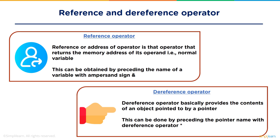The dereference operator basically returns the content stored in the variable pointed to by the specified pointer. For example, if we write asterisk a, then it will return the value of the variable pointed by a.